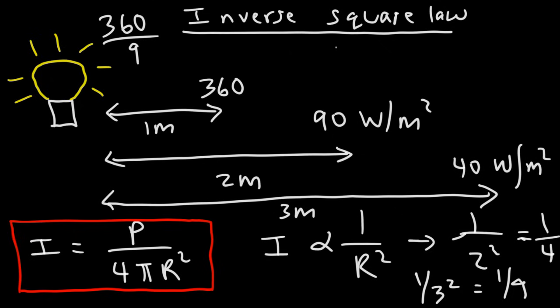So to summarize, if you double the distance, the intensity will reduce by a factor of 4. If you triple the distance, it will reduce by a factor of 9. If you quadruple the distance, 4 squared is 16, it's going to reduce by a factor of 16. So that's the basic idea behind the inverse square law.